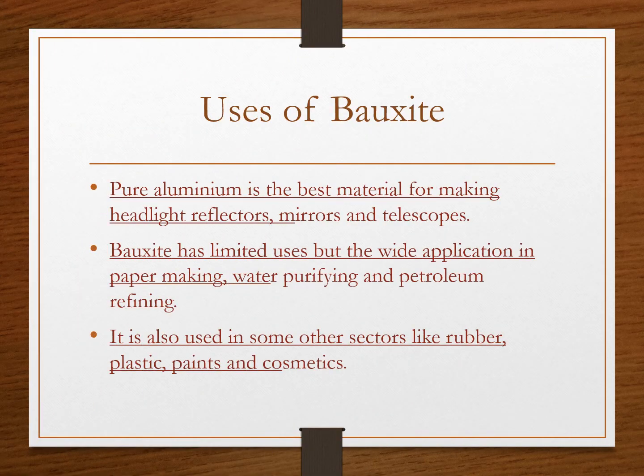Pure aluminium is the best material for making headlight reflectors, mirrors, and telescopes. Bauxite also has applications in paper making, water purifying, and petroleum refining. It is also used in some other sectors like rubber, plastic, paints, and cosmetics.